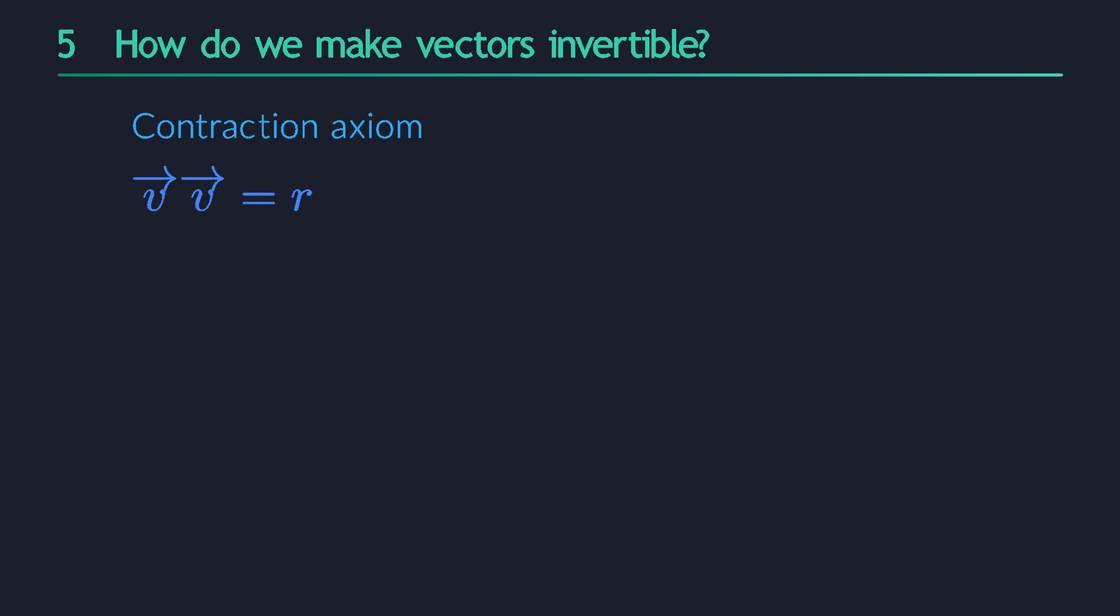But how exactly does the contraction axiom help us invert vectors? It's honestly incredibly easy. Whenever a vector v squares to a real number r, we simply divide both sides by r, and we get this. We have a vector v, and we have a different vector v over r. Their product is 1, and that's exactly the definition of an inverse. The inverse of v is v over r. That's all there is to it.